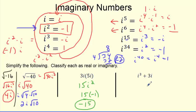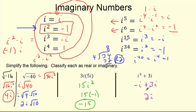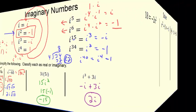How about i cubed plus 3i? I can't add these because they're different powers. But i cubed equals negative i. So it's negative i plus 3i. Since these are like terms, negative 1i plus 3i equals 2i. That's imaginary — it has the i in it.